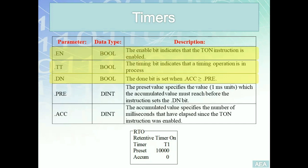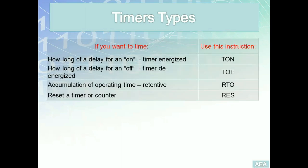In this table, we have all the parameters of any timer. In Allen Bradley, there are three different types of timers; however, they all consist of the same parameters. The three different timers in Allen Bradley are TON, TOF, and RTO.